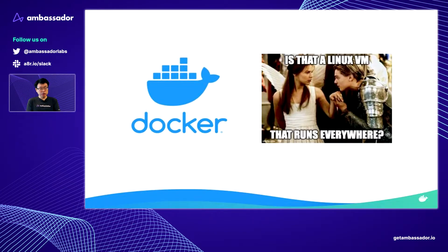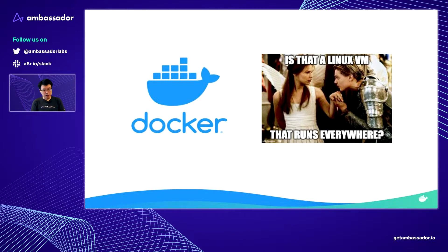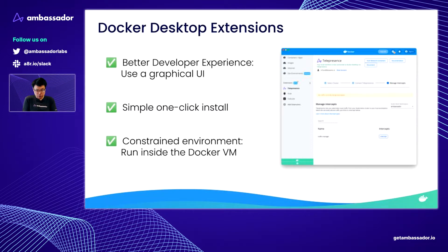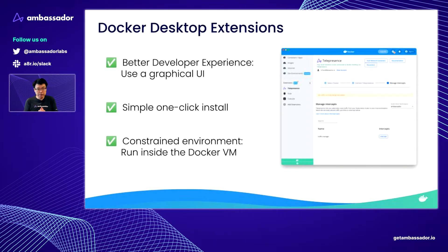Then Docker came along. They reached out to us and said there is this new program called Docker Desktop for extensions, where you can actually build a plugin. We were so excited because Docker installs a Linux VM that you can run everywhere — a super constrained environment — which means all the friction and engineering we've been doing to make telepresence work seamlessly on Mac OS, Windows, and Linux, we can actually delegate back into Docker. With Docker Desktop extensions, we've built a Telepresence extension for Docker Desktop using their SDK. It gives you a better developer experience with a graphical user interface instead of the CLI. Instead of brew install on Mac, curl on Linux, and a different installer on Windows, we just use the Docker Desktop for extensions installer — one-click install from the marketplace. And it just works because it's a constrained environment running inside the Docker virtual machine.